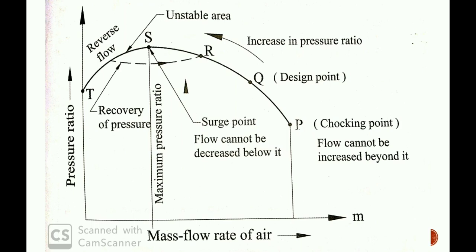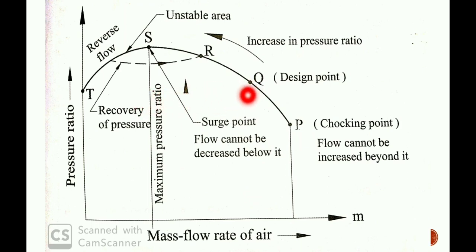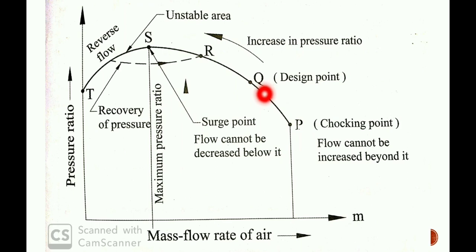Consider the delivery valve of the compressor is fully open, so the pressure ratio will be at the optimum pressure ratio. The mass flow rate and pressure ratio define the operating point. When the delivery valve is fully open, the compressor operates at optimum conditions — the operating point sits at the correct mass flow rate and pressure ratio.